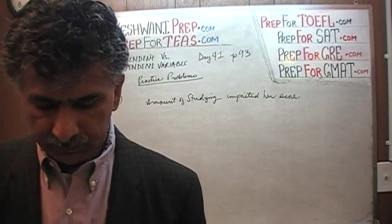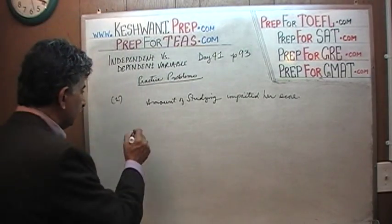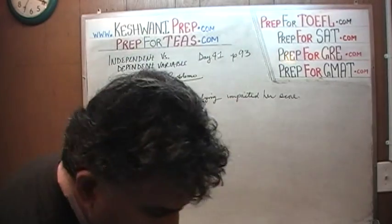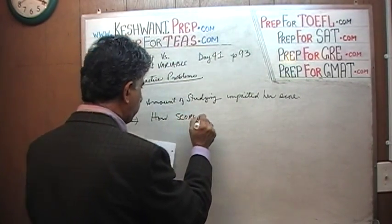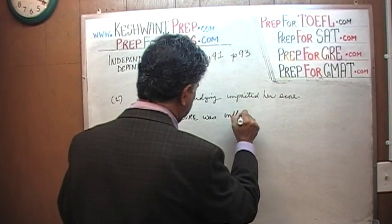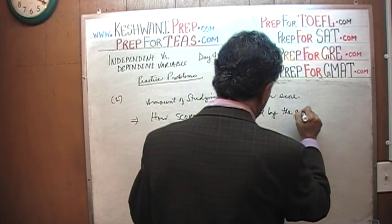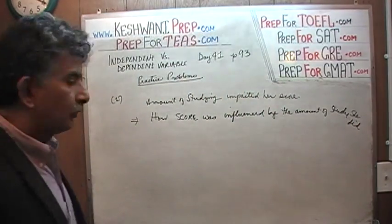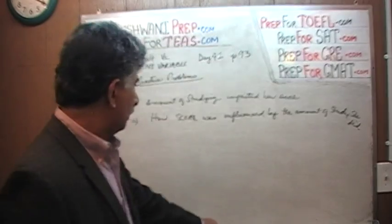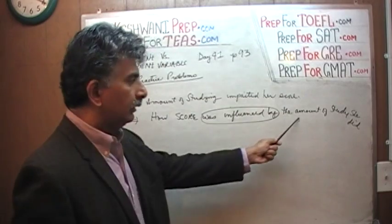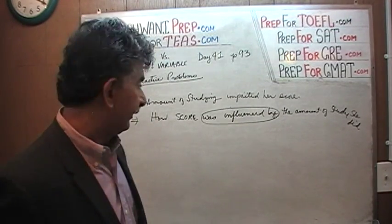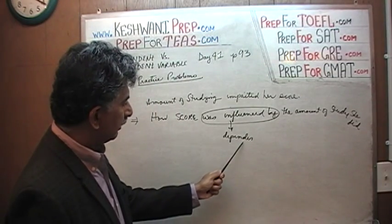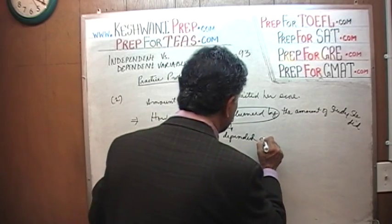The amount of studying impacted her score. That is another way of saying her score was influenced by the amount of study she did. Another way of saying the same thing would be: her score depended on the amount of study she did.